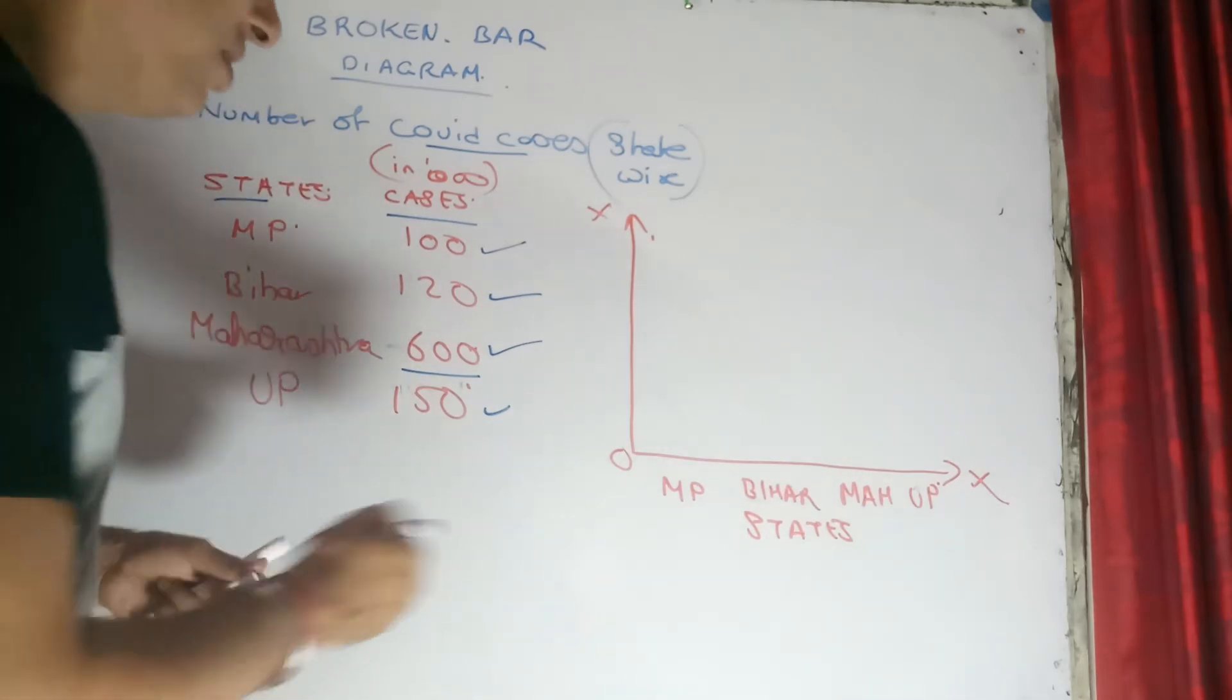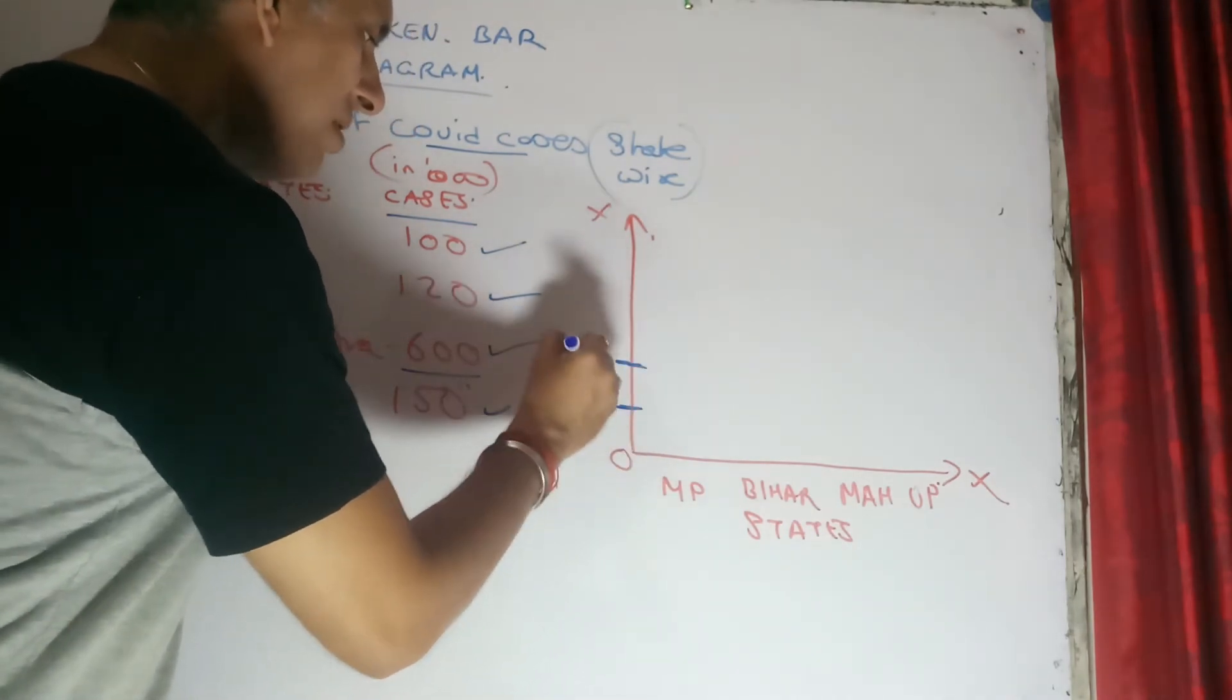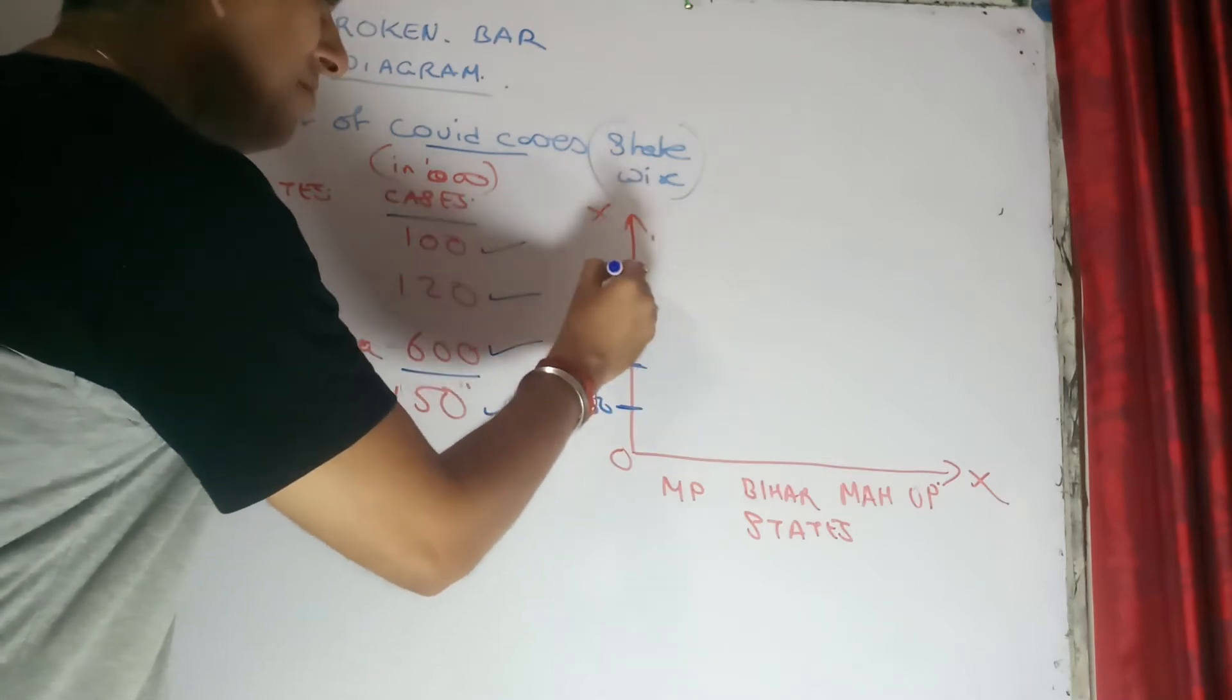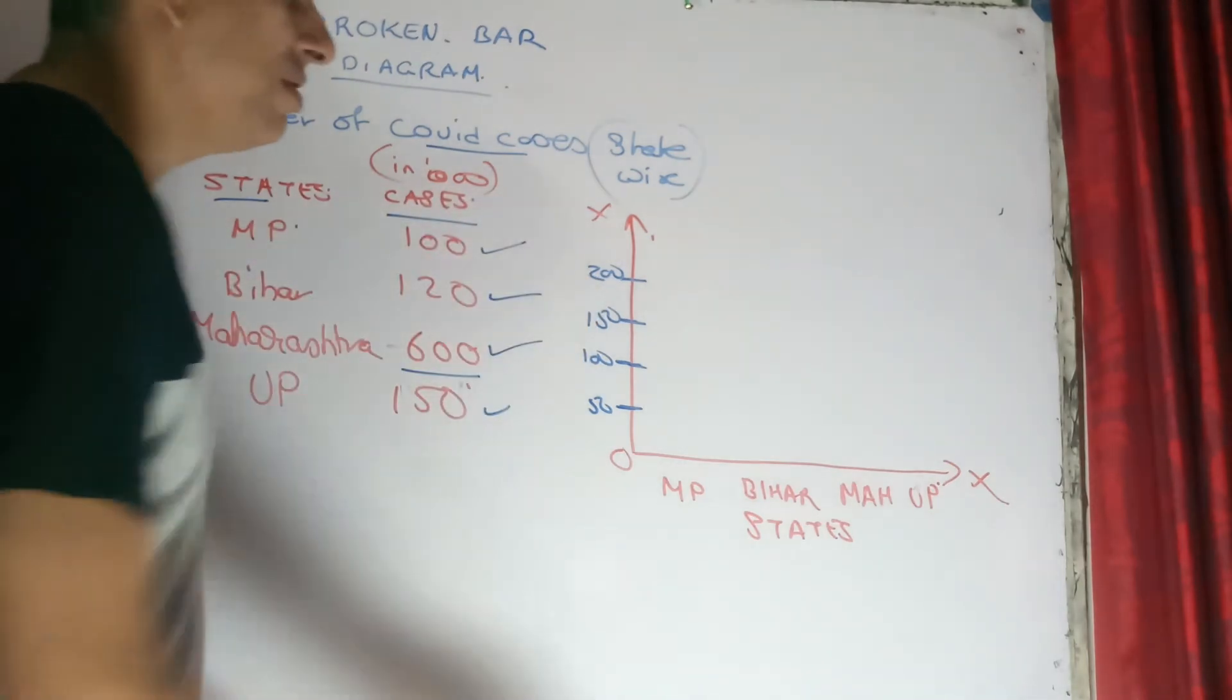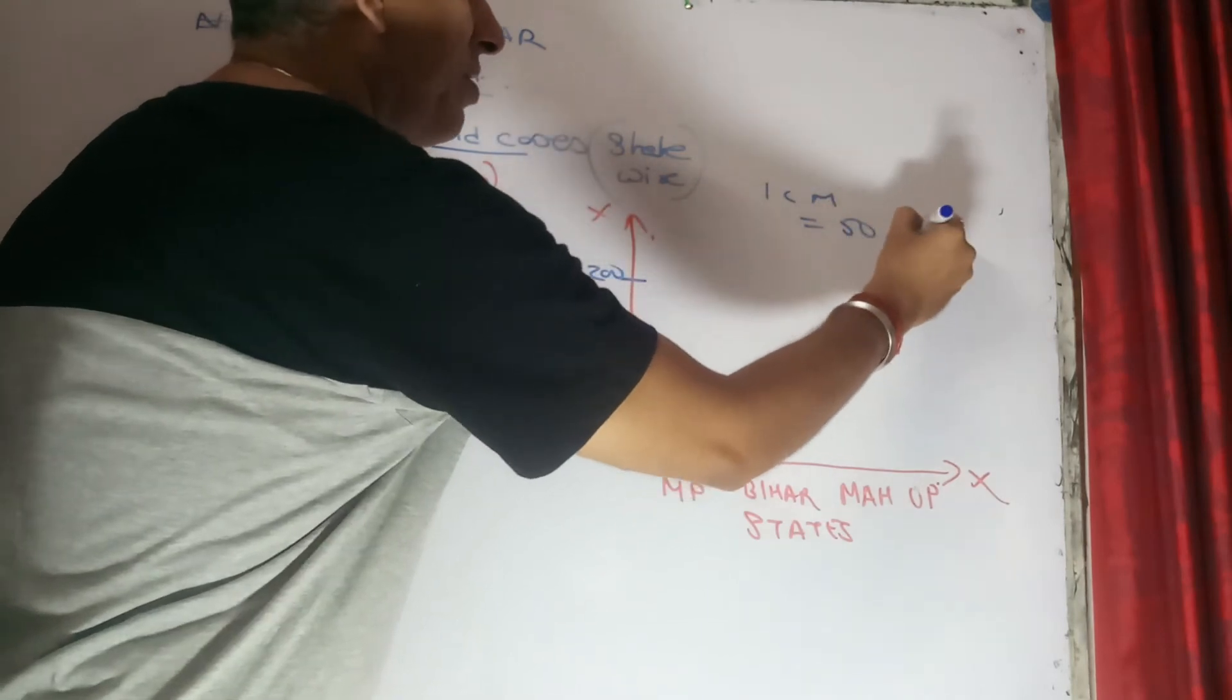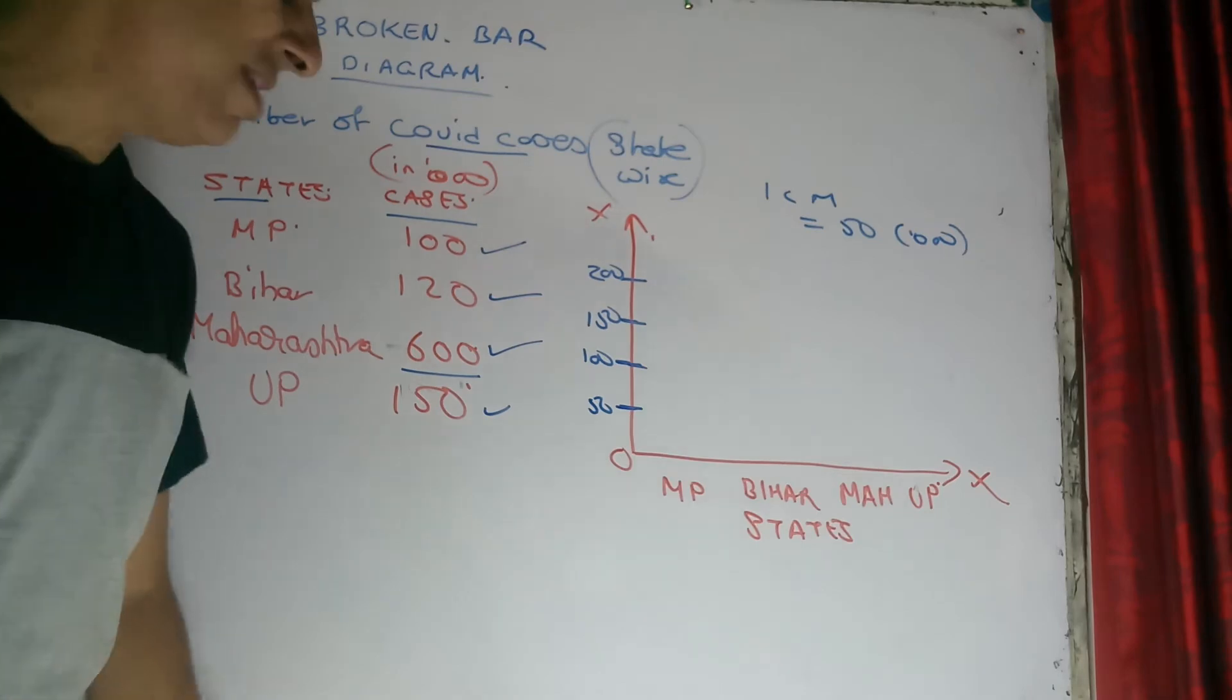MP, for that, we have to take the scale first. Let me take the scale of 50,000 for one centimeter. And I am taking, just for the sake of taking 200 as such. Otherwise, I could have reduced it to 50, 150 also. So what is the scale? One centimeter equals to 50,000 in terms of cases.